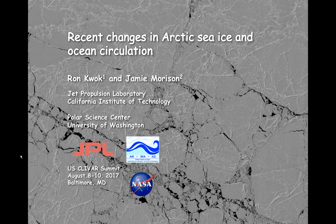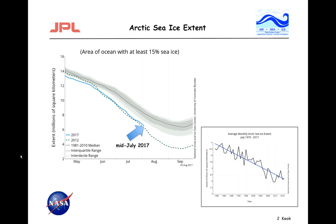What I'm going to talk about first is what's happening this year. All of us are interested in keeping track of what the ice is doing because it's changing so fast. We are in mid-July. The panel on the left shows you where we're at compared to the record minimum. Most of the observations we get are from passive microwave sensors from satellites, and that's how we map the ice extent. We're tracking pretty closely to the record minimum, and I think it's likely that we'll get another record this year.